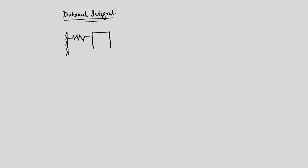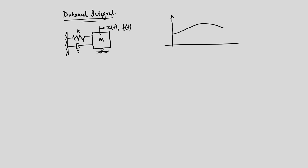We have this SDOF system and it is excited by some arbitrary forcing function. We know the stiffness, damping, mass, and the degree of freedom is x(t) and the forcing function is f(t). If you recall, we developed the argument that we have an arbitrary forcing function, and at time point tau we consider a differential element.